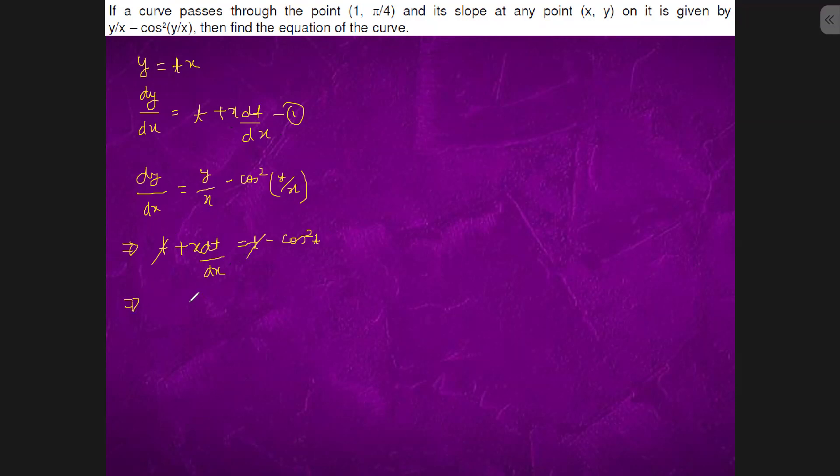It is simply minus x square t dt equals to dx square x. Integrating both sides.